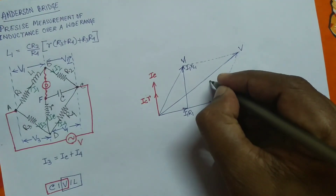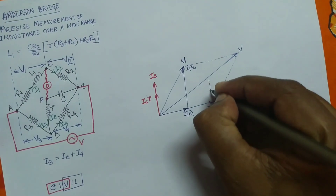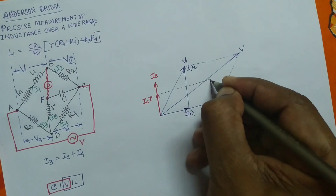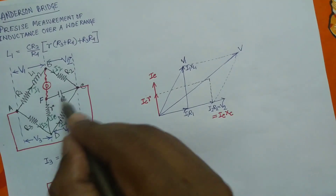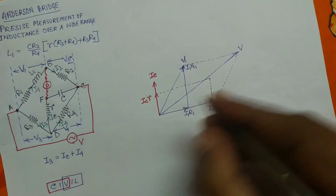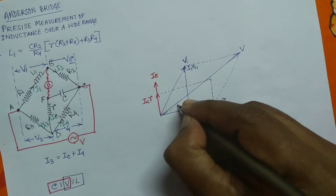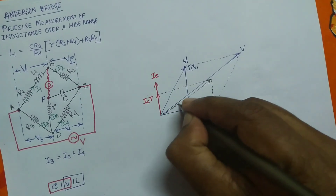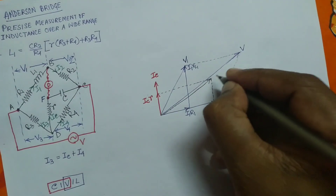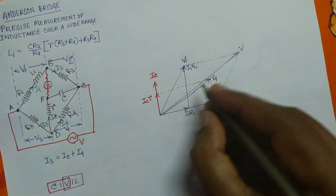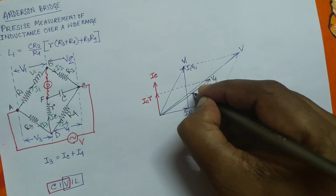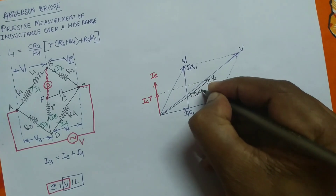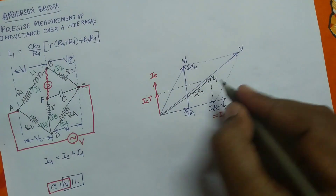Adding the two phasors — the resistive drop Ic·r and the capacitive drop Ic·Xc — gives the resultant V4, the voltage across the DC branch.